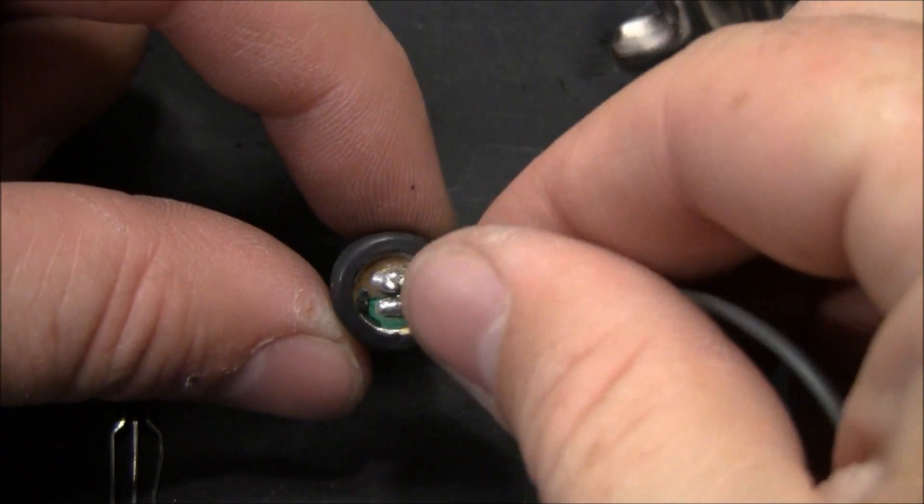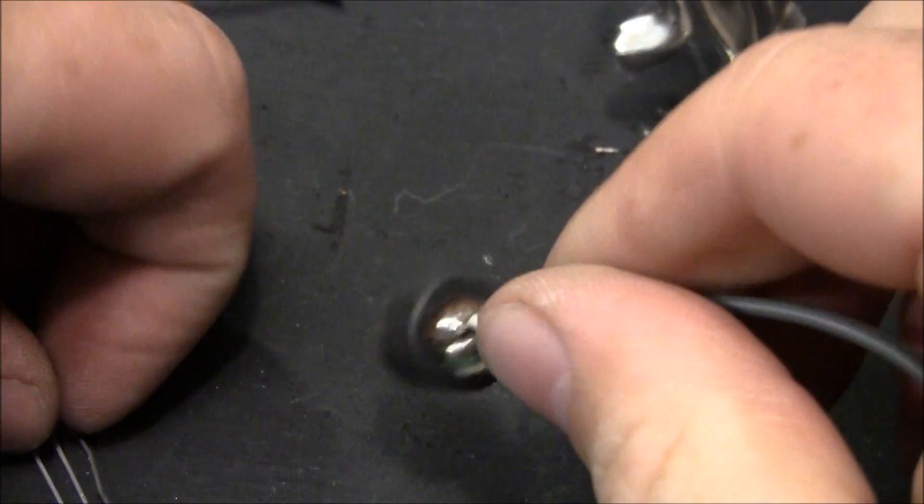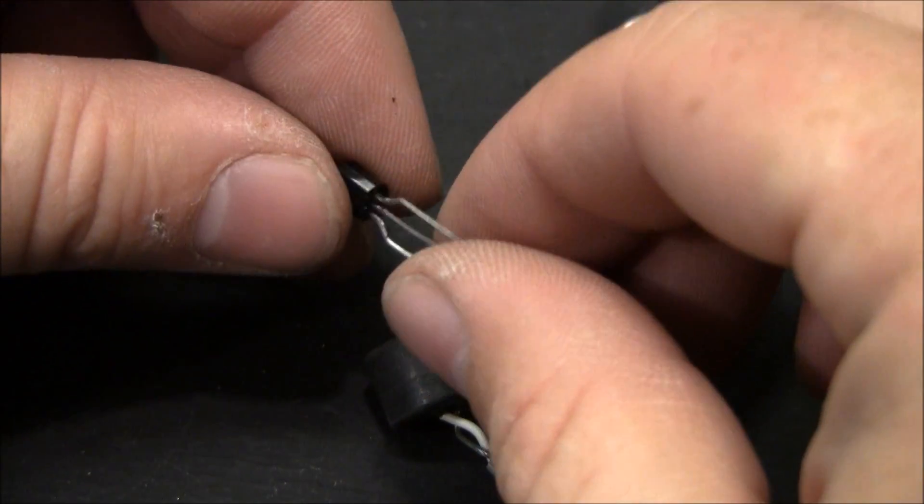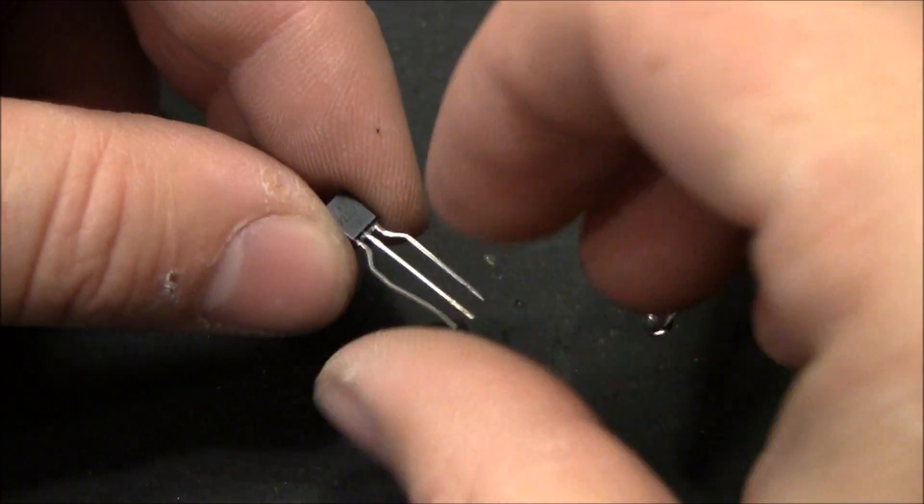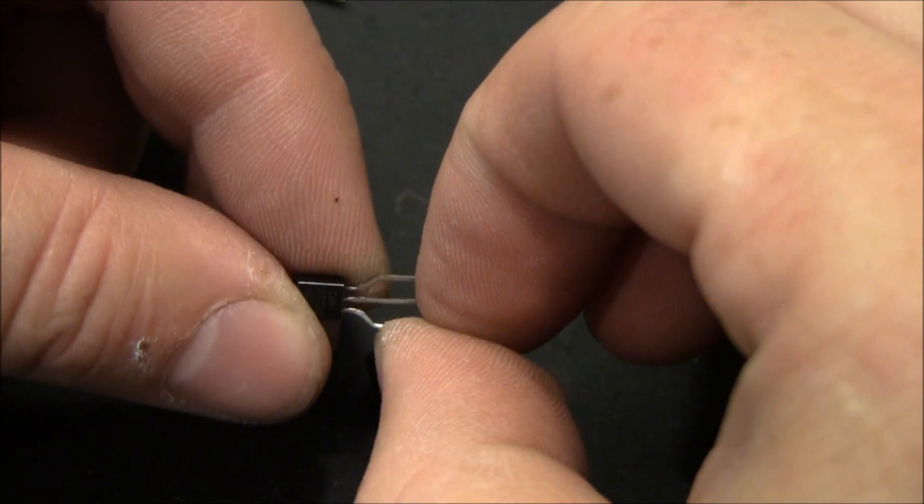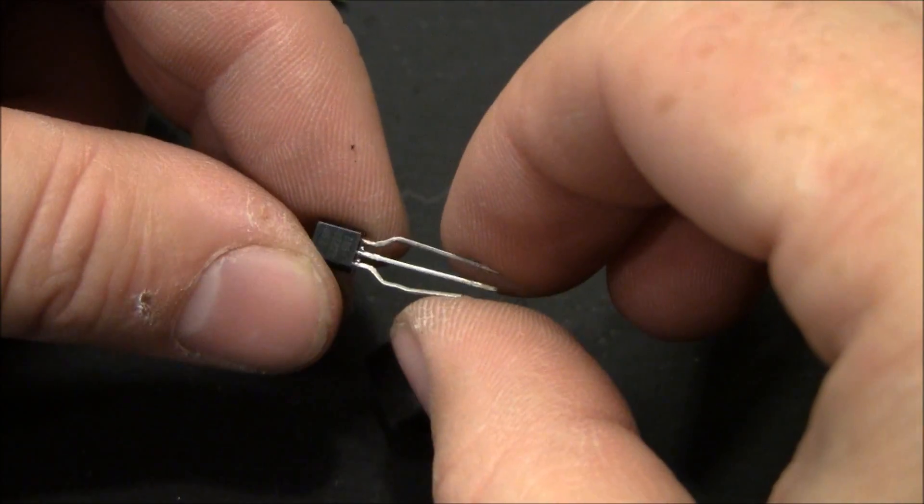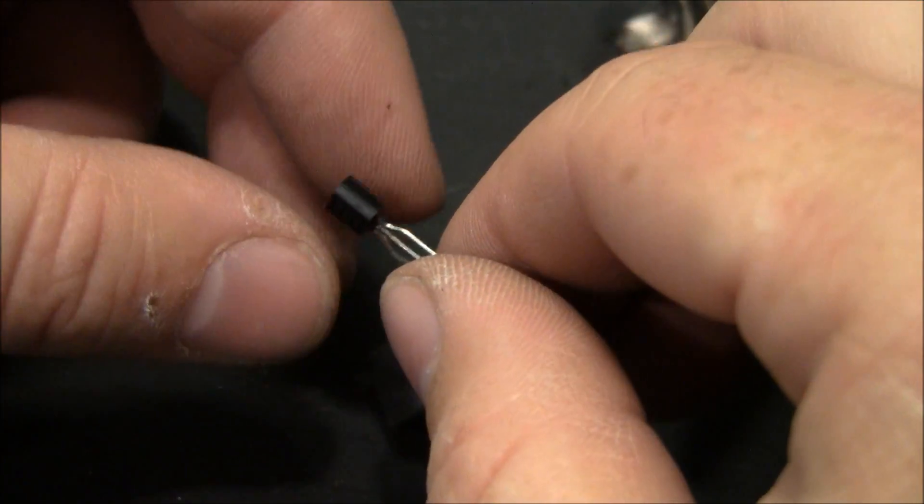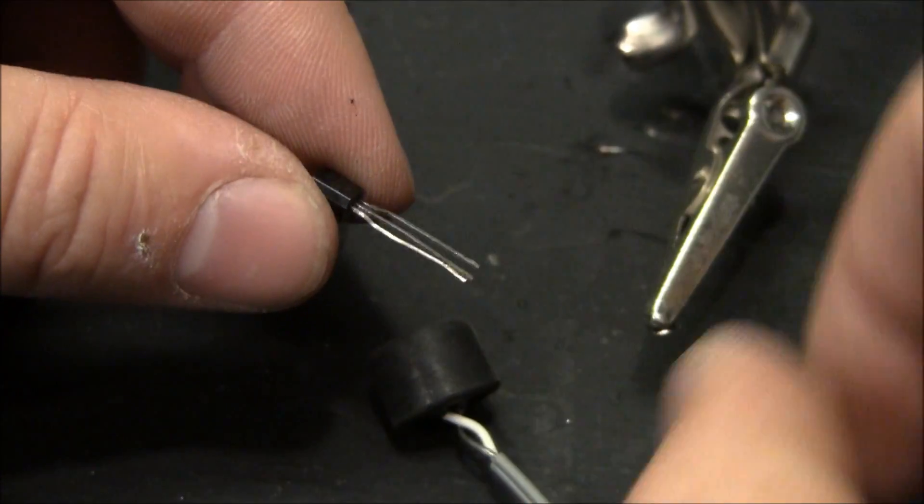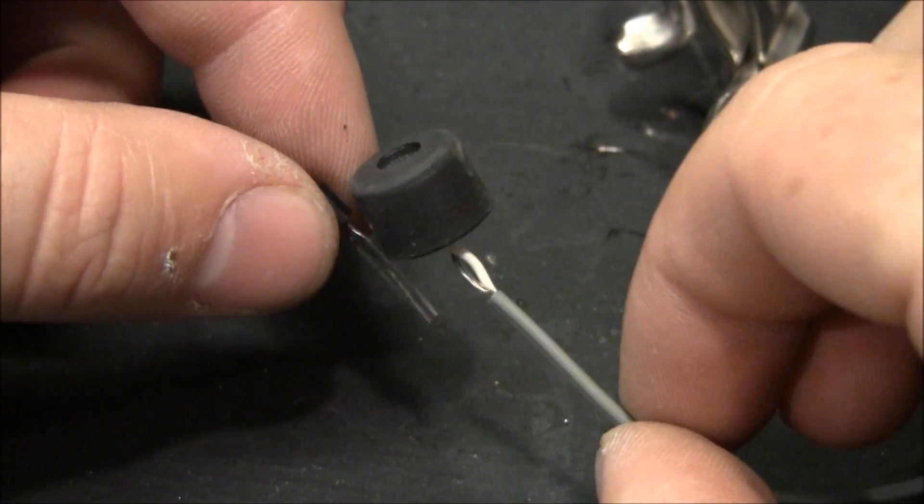When you're soldering little bitty components like this little microphone or a transistor, you might not want to have your iron as hot as possible and you might want to try to make it quick, because if you get these really hot you might damage them, so be careful with that.